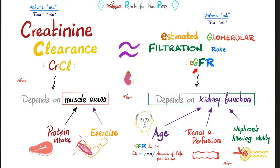How about the EGFR? The GFR represents your kidney function, and it depends on your age. As you grow older, you lose kidney function and your GFR goes down by about 6.5 ml per minute for each decade of your life after age 20. So if I am 30 years old, I lost 6.5 ml/min. If I am 40, I lost 13 ml/min relative to a 20-year-old adult.